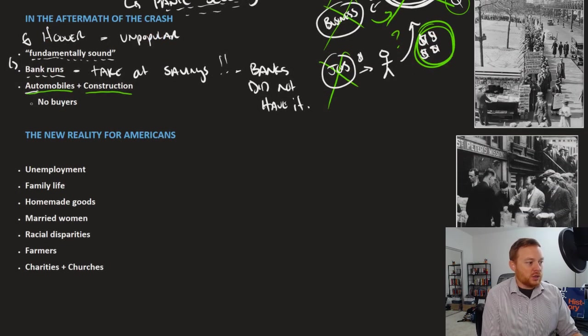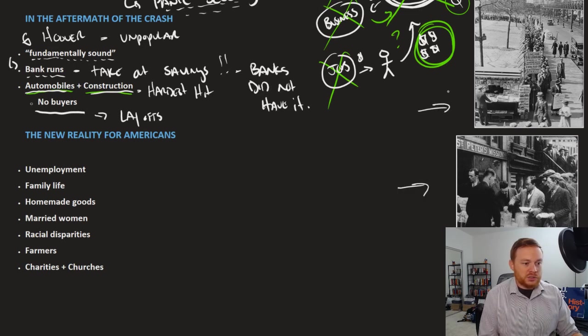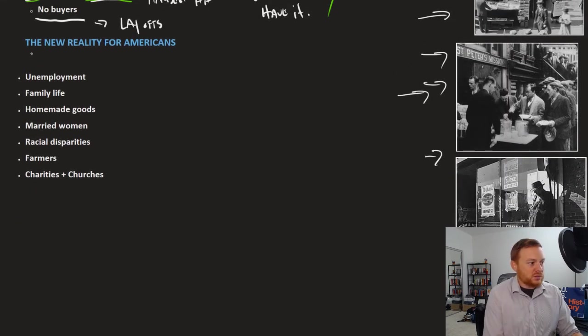Like I said, automobiles and construction, these were two of the industries that were hardest hit. Because there are no buyers, that fundamentally led to layoffs. And pretty soon the entire economy is stuck in a rut. So what did the Great Depression mean for Americans? Well, you got some images here that kind of help illustrate what the Depression meant.